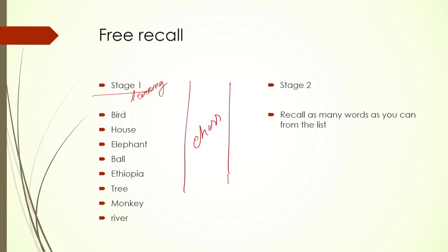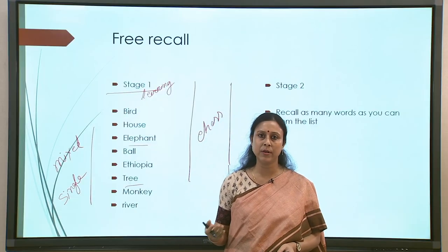This is free recall — absolutely free, no constraint. There can be many variables: the list can be a single-language list or a mixed-language list, depending on what you are trying to look at. For example, a monolingual list, or we can also make it a Hindi-English bilingual list with some Hindi words interspersed. These are the manipulations that are possible. Stage 1 is learning, stage 2 is recalling.